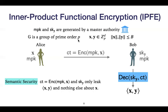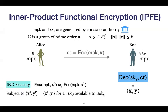Inner product functional encryption has been extensively studied. In terms of semantic security, the goal is to only leak the inner product and nothing else about the plaintext. One can also consider indistinguishable security, where you want that ciphertexts for x0 and x1 are computationally indistinguishable. Because you can always perform decryptions if you have a secret key, you cannot trivially distinguish, so you need these additional trivial relations.